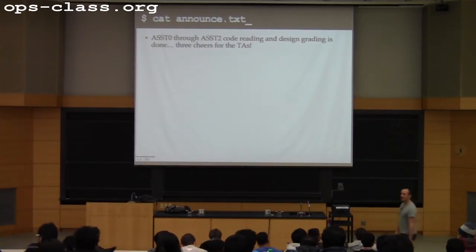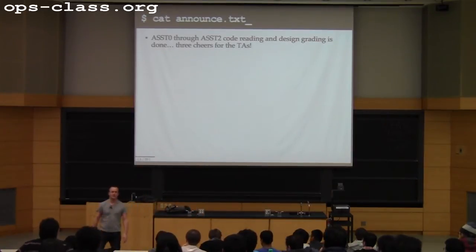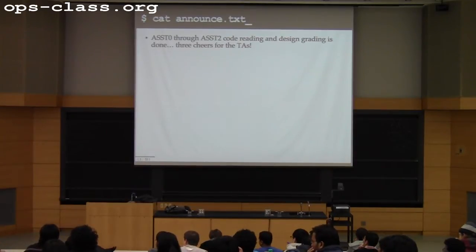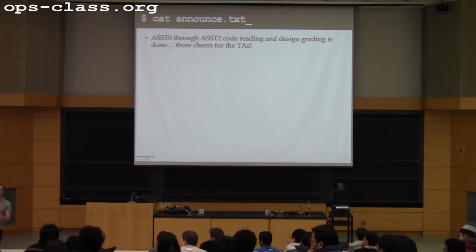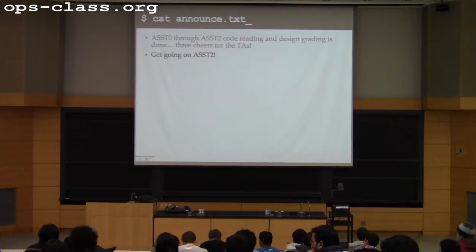As for the average, the website has that information. At this point, I suspect there is still at least 60% of the points for the assignments still on the table, maybe closer to 50%, because you have the assignment two implementation to do and all of assignment three. So there's still a lot left to go in terms of points. Get going on assignment two implementation.